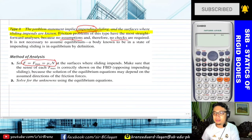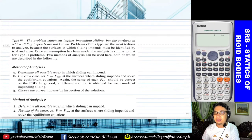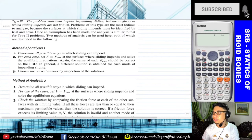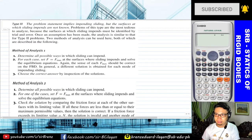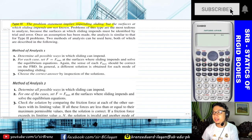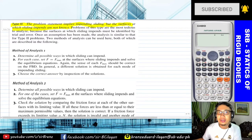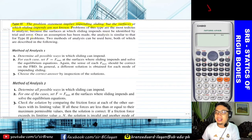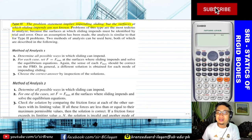Let's proceed with the last type — Type 3. This involves impending sliding but you don't know at which point it will occur. The problem statement implies impending sliding, but the surfaces at which sliding impends are not known. Problems of this type are the most tedious to analyze because the surface at which sliding impends must be identified by trial and error — so the analysis is a bit more involved.